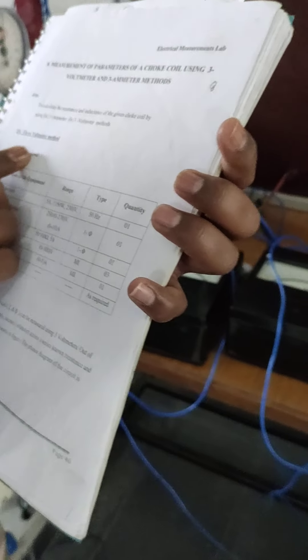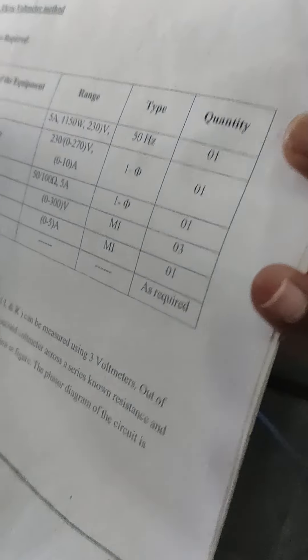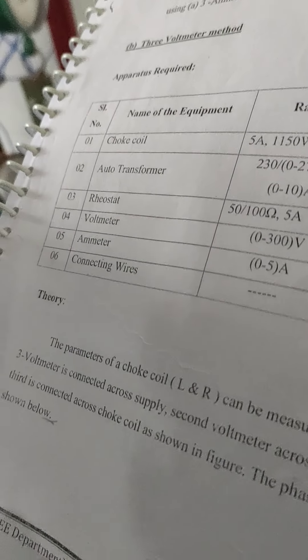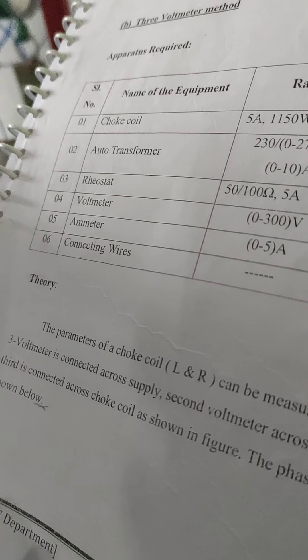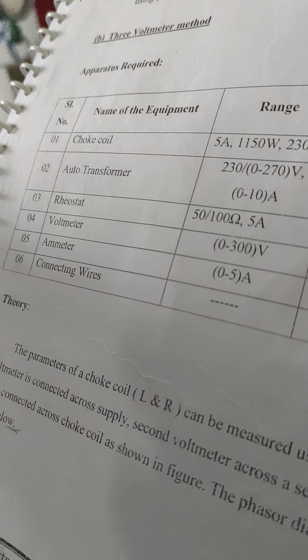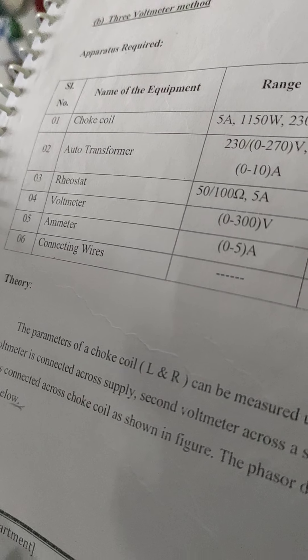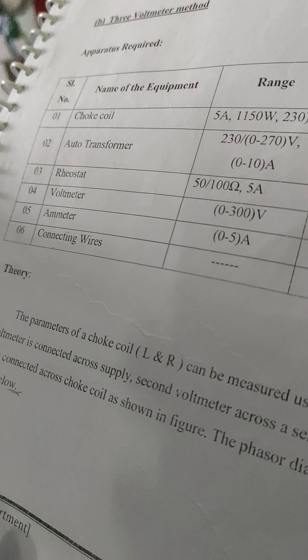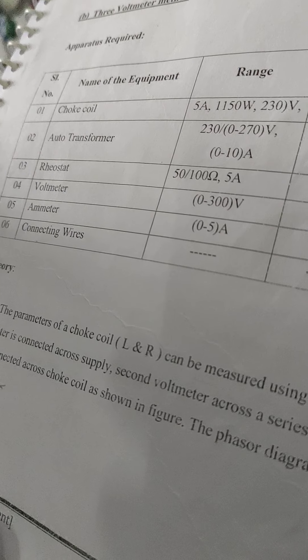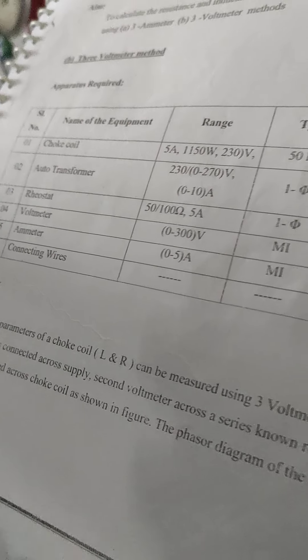The components required for this experiment are 3 voltmeters, a choke coil, autotransformer, rheostat, and connecting wires. These are the required components.